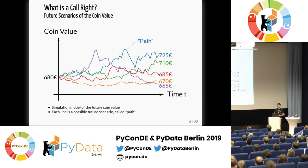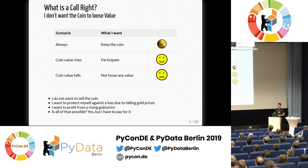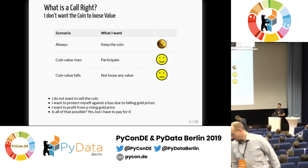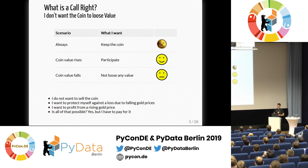Each of these scenarios — we call them paths — gives one possible view of the future. The coin can go up or down. What do I want? First, I want to keep my coin because I'm sentimental. Second, if the gold price goes up, I want to participate. But if the coin value falls, I don't want to lose anything. You might say I can't have all that — but I say yes I can. I have to pay for it. And this is the essential question of this talk: how much do I have to pay for that?